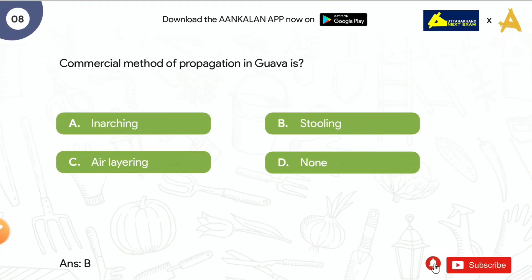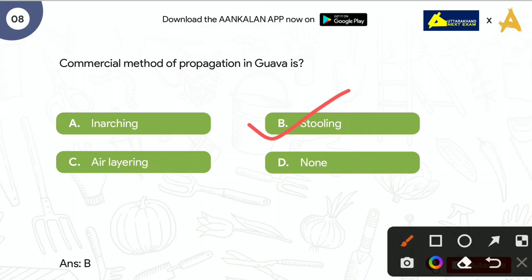Next question is: Commercial method of propagation in guava is? Options are: Inarching, Stooling, Air Layering, and None of the above. The correct answer is Stooling. Stooling में होता क्या है कि guava के नए shoots के ऊपर मिट्टी चढ़ा देते हैं, जिसके वजे से उनमें से roots develop होती है, फिर बाद में cut करके separate कर देते हैं। Apple में भी stooling होता है।